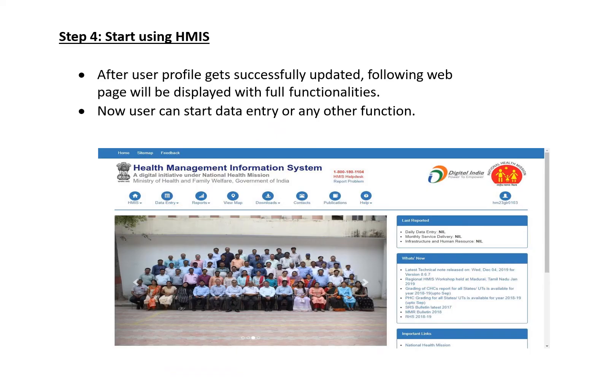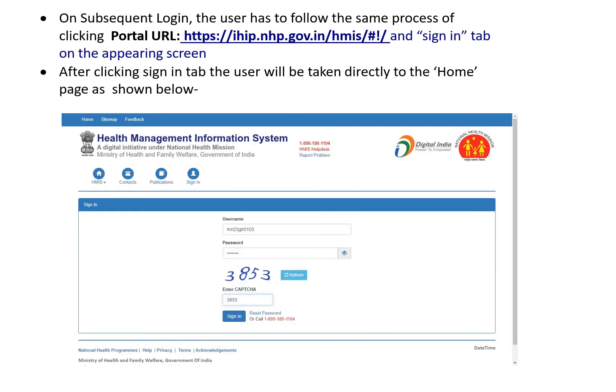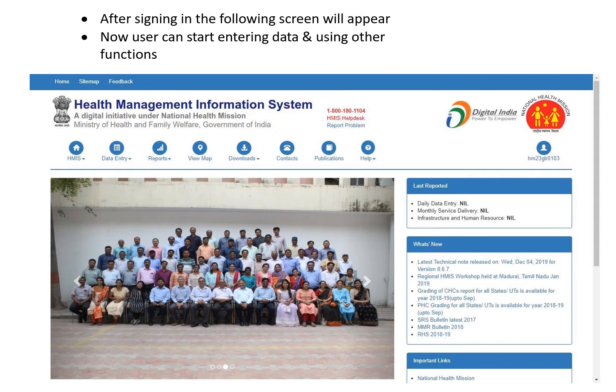Step four: start using HMIS. After the user profile is successfully updated, the full-functionality web page will be displayed. Now the user can start data entry or any other function. On subsequent logins, the user follows the same process — click the URL and the sign-in tab. After clicking sign-in, the user will be taken directly to the home page, and can start entering data and using other functions.